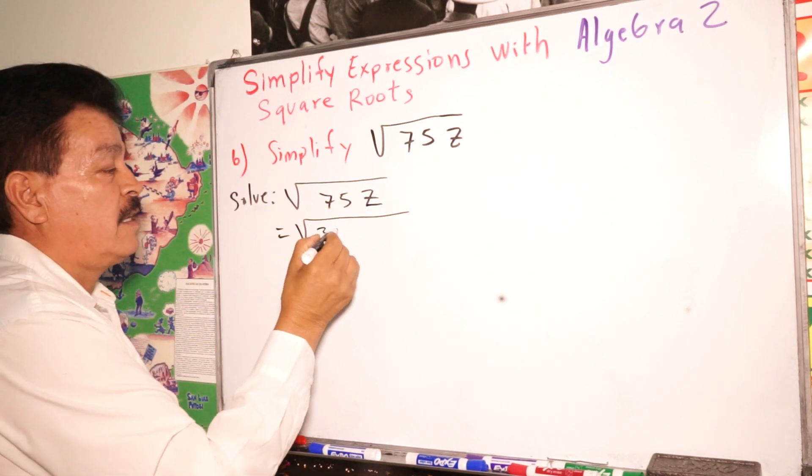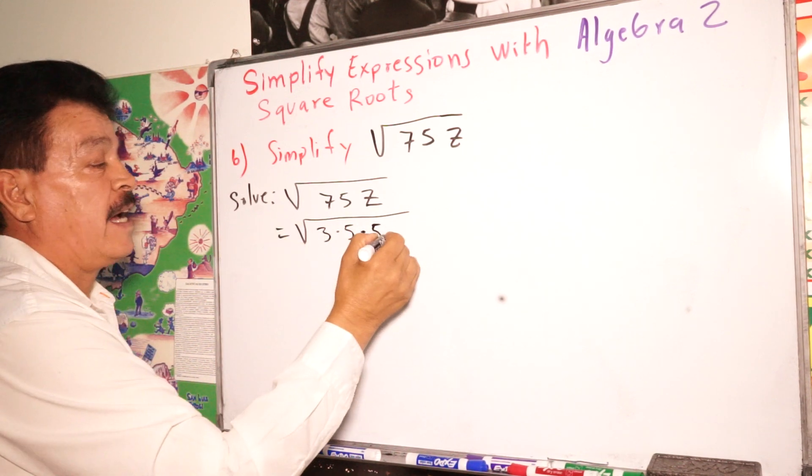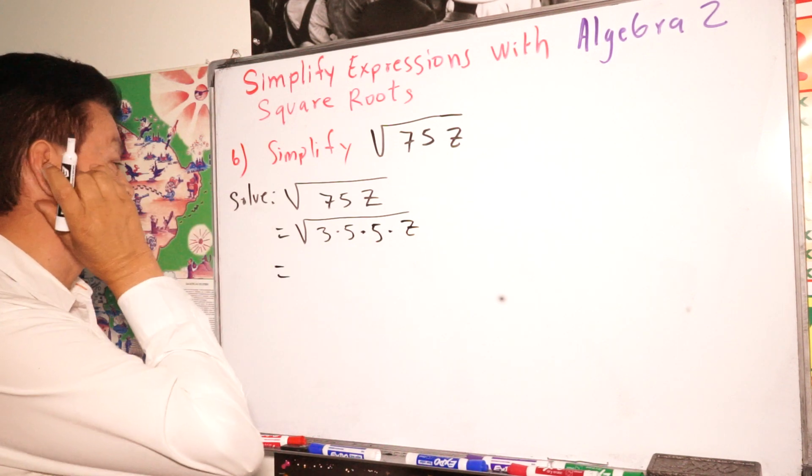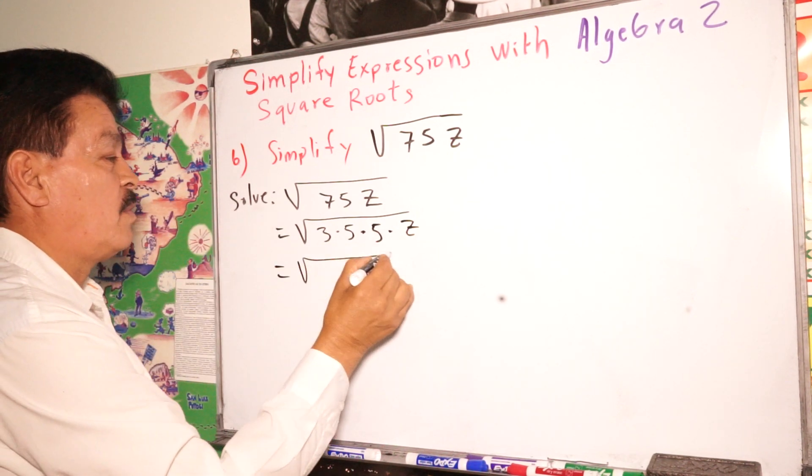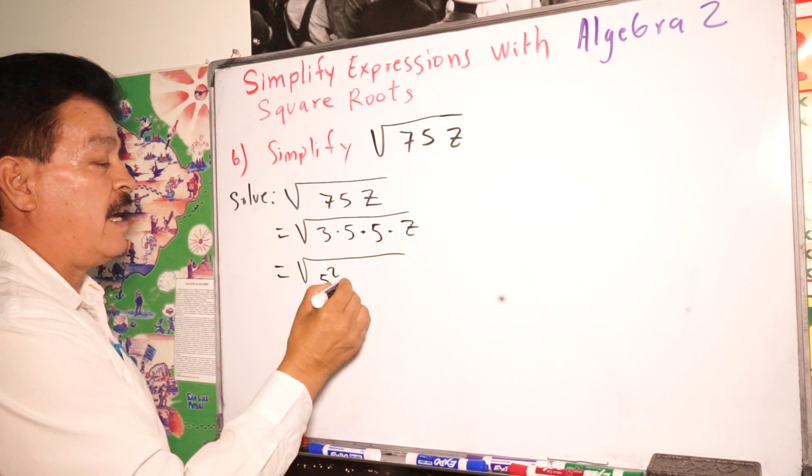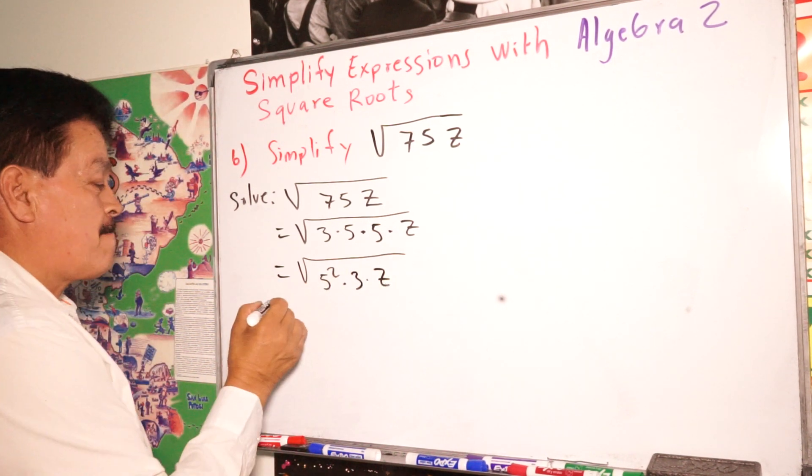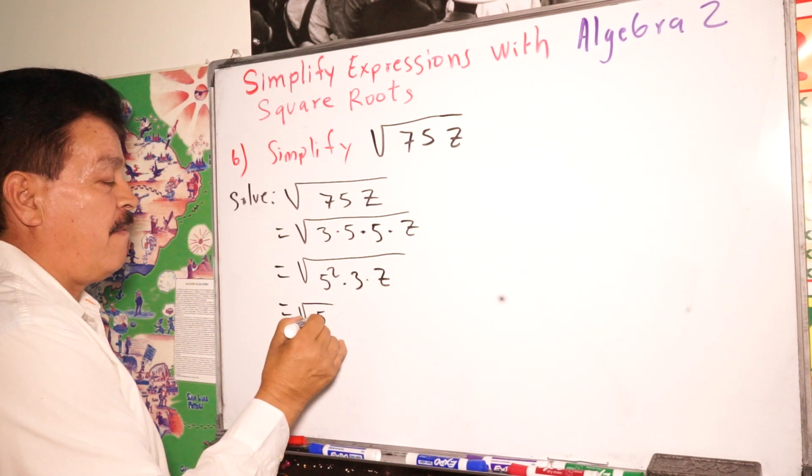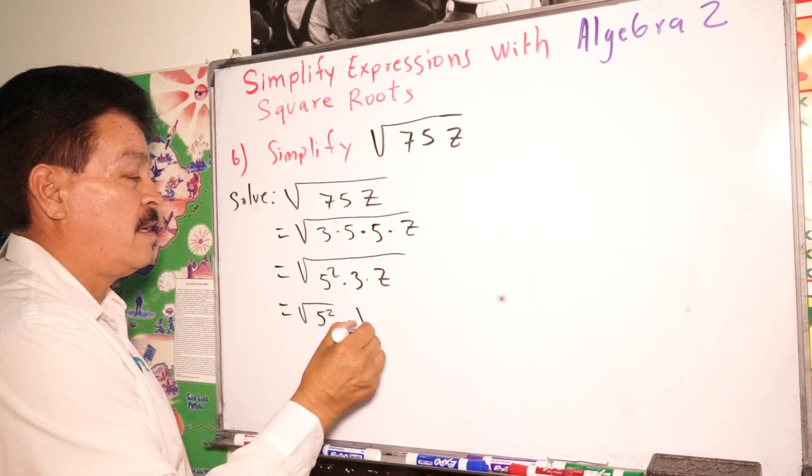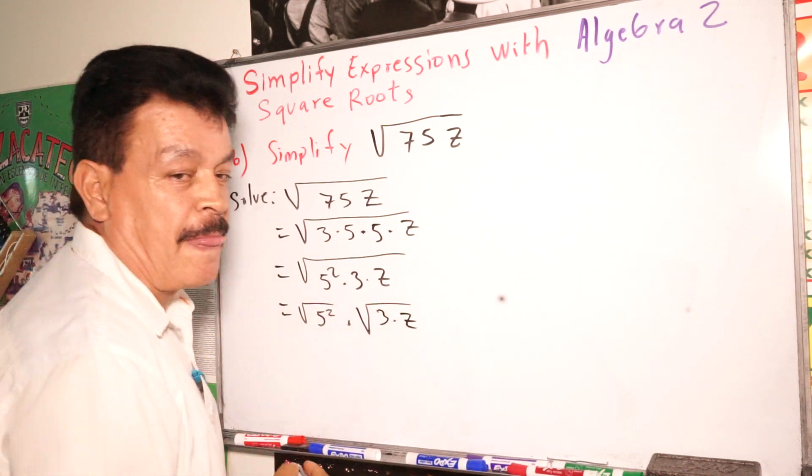Some factors, so 3 times 5 times 5 times Z. Here, it's going to be equals 5 to the second power times 3 times Z. So now, next step, 5 square root to the 5 to the second power times, in this case, 3 times Z.